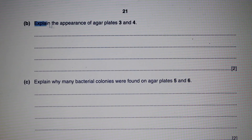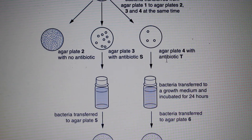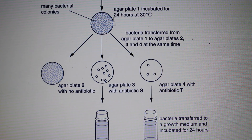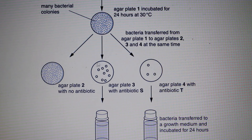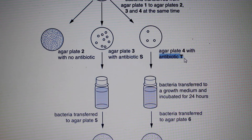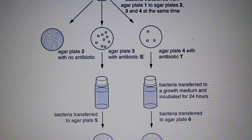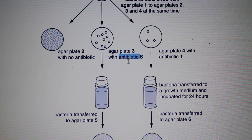The question asks us to explain the appearance of agar plates 3 and 4. Plates 3 and 4 show far fewer bacterial colonies compared to the control plate, because these plates are impregnated with antibiotics that inhibit bacterial growth. However, some colonies are still present on plates 3 and 4, indicating that some bacteria are resistant to the antibiotics — if none were resistant, all bacteria would have been killed.